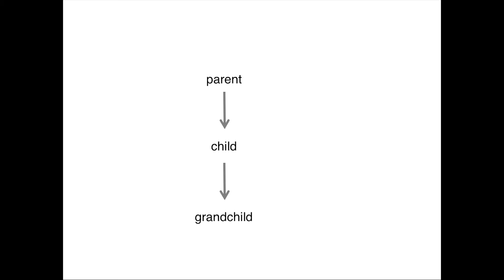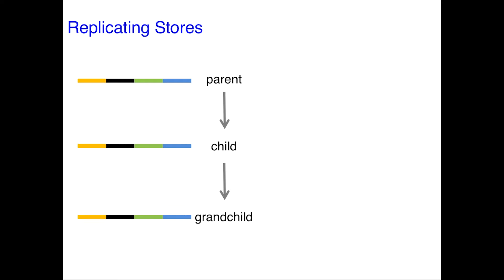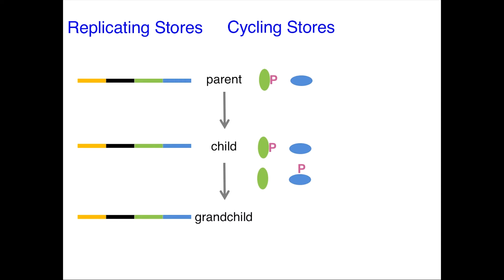The information that is passed through bottleneck stages from parent to child to grandchild is therefore held in two kinds of stores. Stores that replicate, keeping information in the same kind of molecule like the genome sequence, and stores that cycle, transferring information between different kinds of molecules like the phosphotransfer shown in this sequence. Together, all of the replicating and cycling stores of information within single cells that serve as bottleneck stages for an organism can be thought of as the cell code for making that organism.